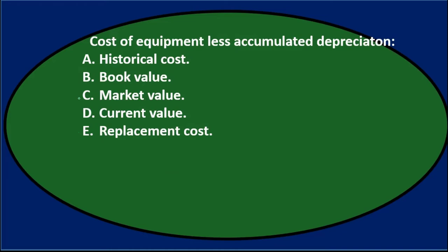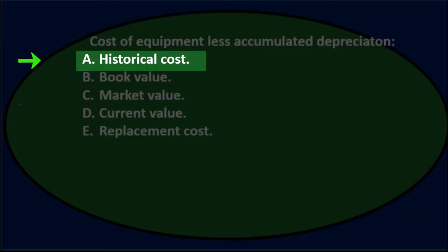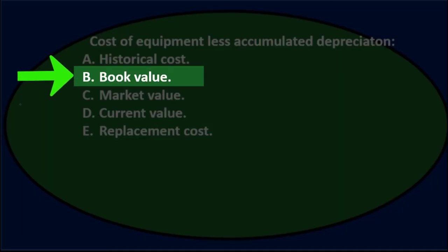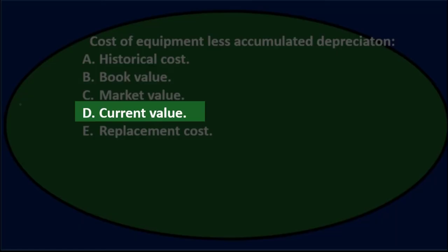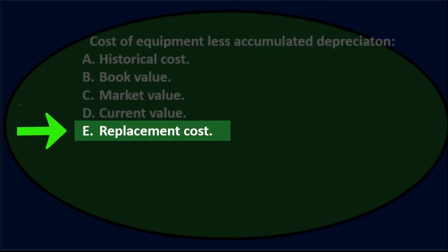Next question. Cost of equipment less accumulated depreciation is A. historical cost, B. book value, C. market value, D. current value, or E. replacement cost.